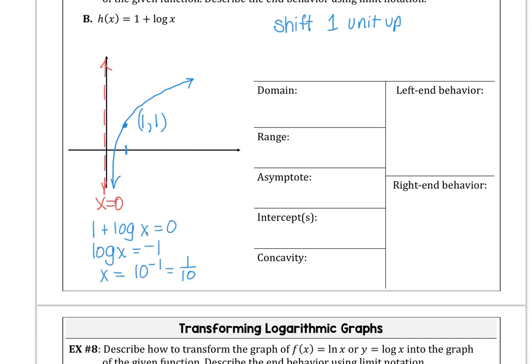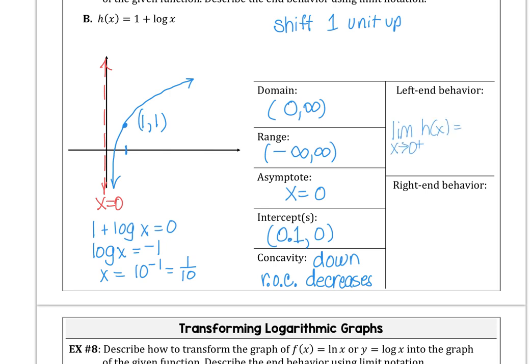And analyzing all of the features, the domain is still 0 to infinity. The range is still all reals. X equals 0 was our vertical asymptote. But the x-intercept is 1 tenth, 0. The function is still concave down. The reason is the rate of change is decreasing. The left-end behavior, as you approach 0 from the right, h of x is going to negative infinity. And as we approach infinity, the right-end behavior is heading to infinity.